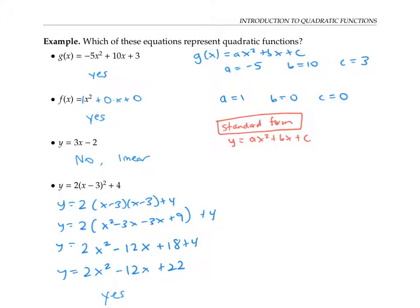A function that's written in the format of the last function, that is in the form of y equals a times x minus h squared plus k, for some numbers a, h, and k, that's said to be in vertex form.